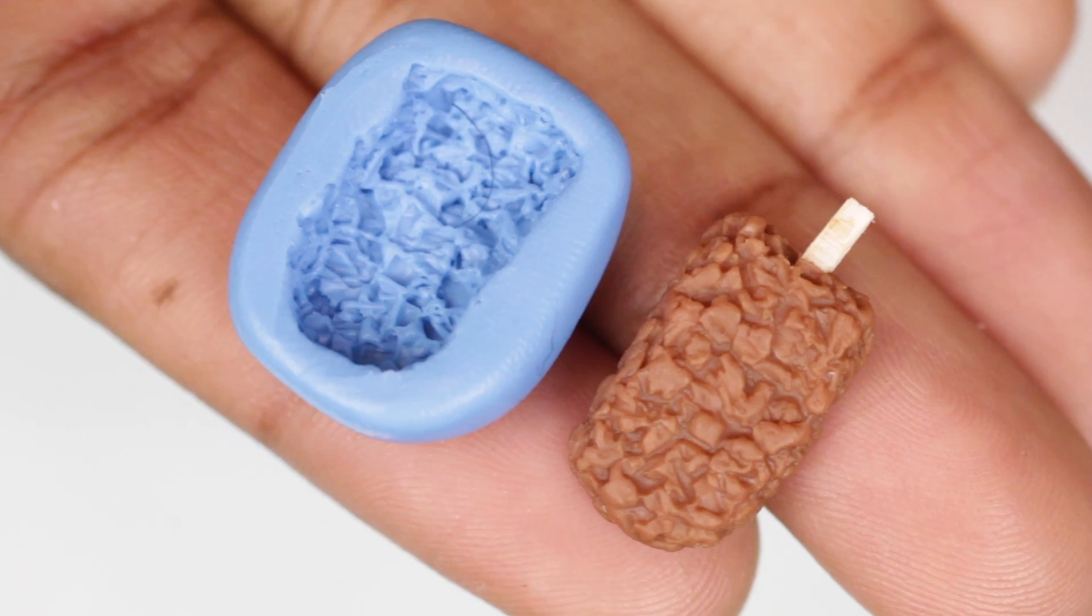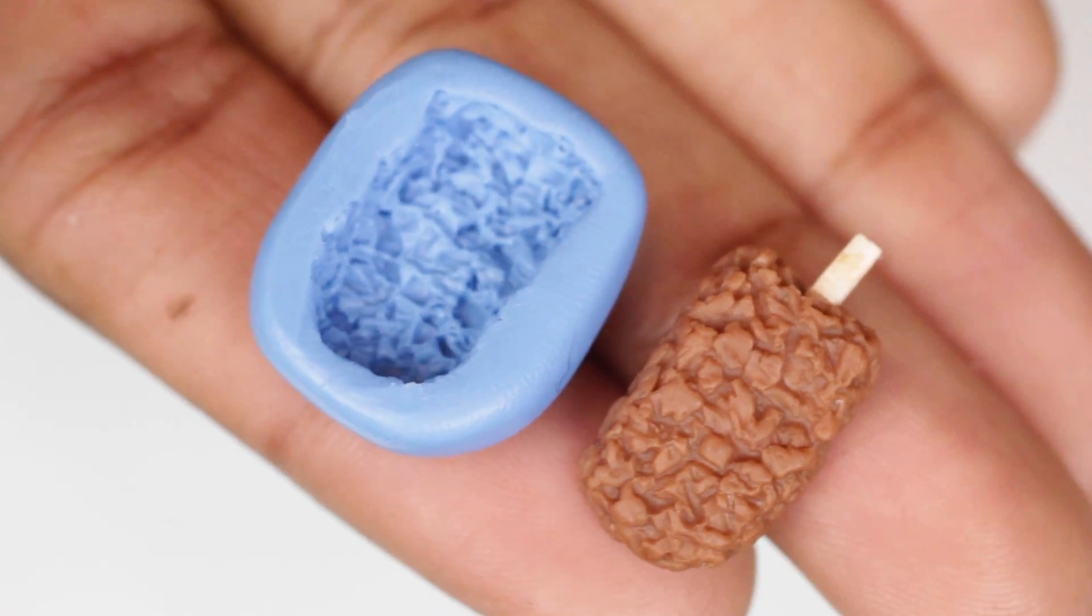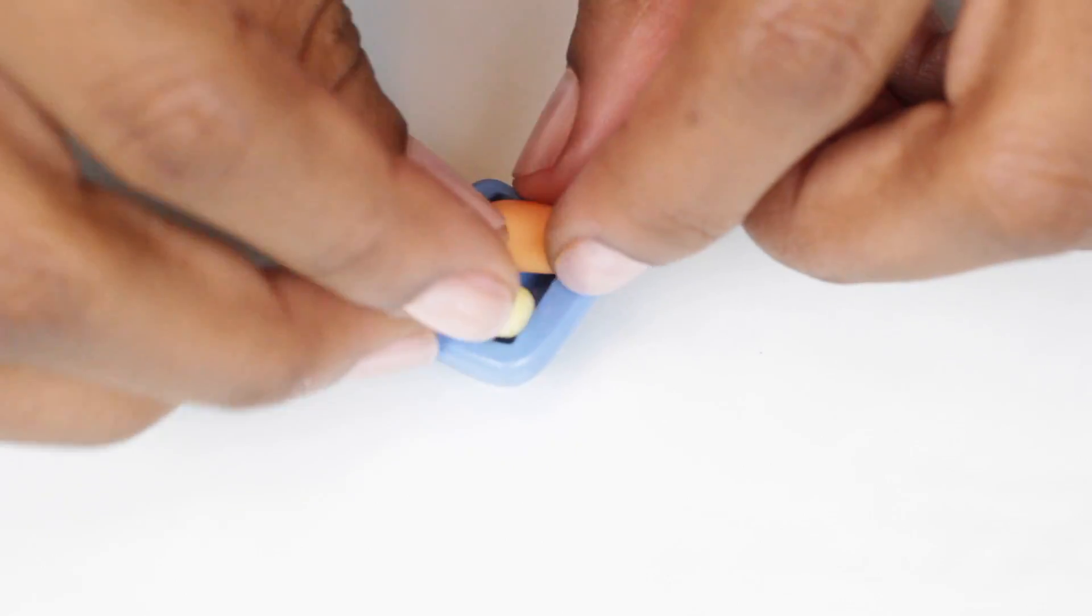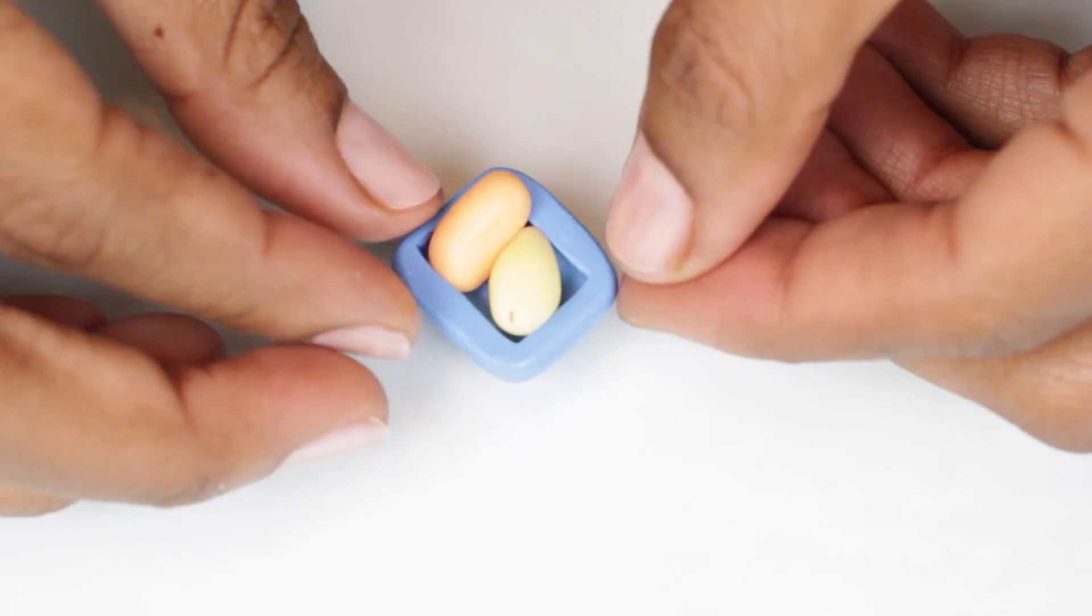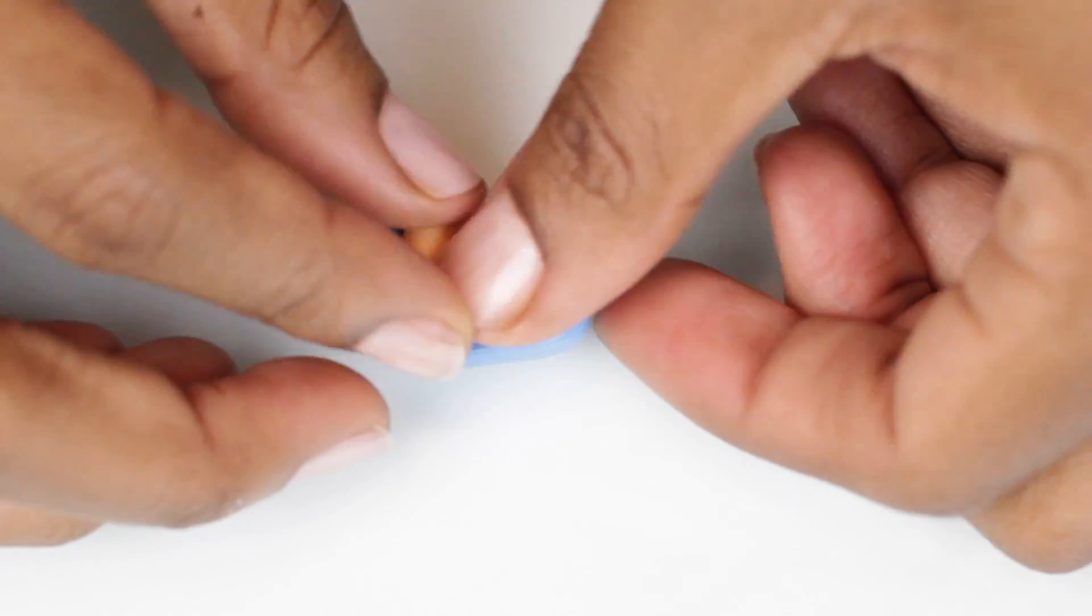Here's a little crunchy popsicle mold that I just pressed brown clay into and here's a two-tone yellow and orange popsicle.